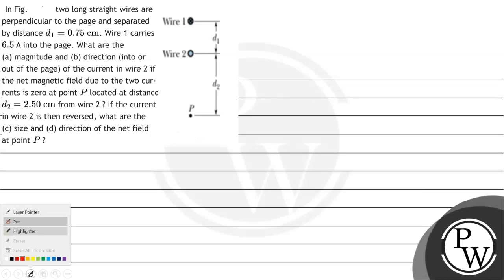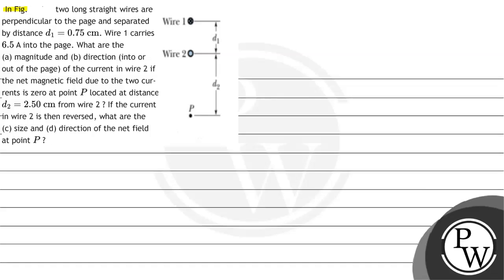Hello. Let's read the question. In figure two, long straight wires are perpendicular to the page and separated by a distance d1 equal to 0.75 cm. Wire 1 carries 6.5 ampere into the page. What are the magnitude and direction — into or out of the page — of current in wire 2 if the net magnetic field due to the two currents is zero at point P, located at a distance d2 equal to 2.5 cm from wire 2? And the second part: if the current in wire 2 is reversed, what are the size and direction of the net field at point P?